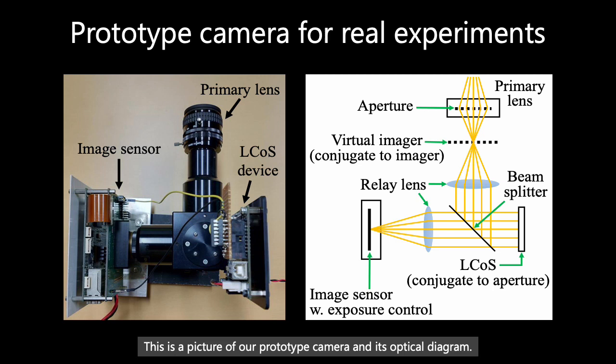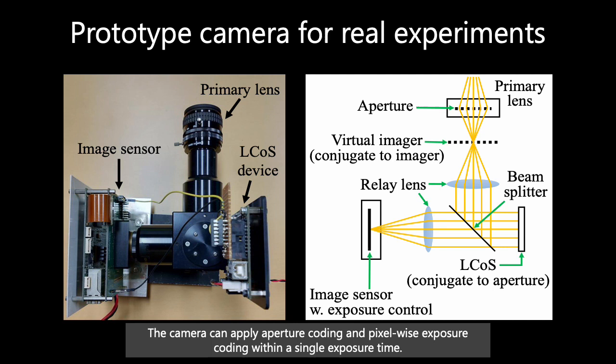This is a picture of our prototype camera and its optical diagram. The camera can apply aperture coding and pixel-wise exposure coding within a single exposure time.